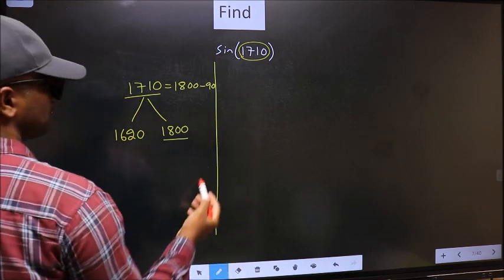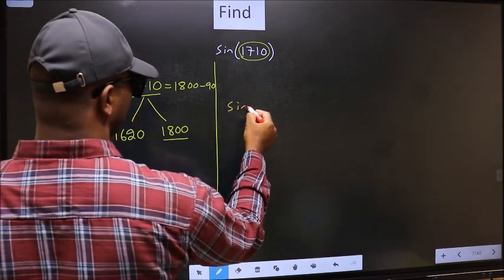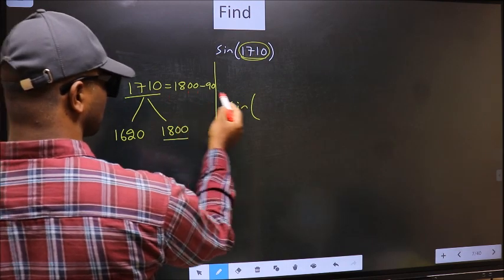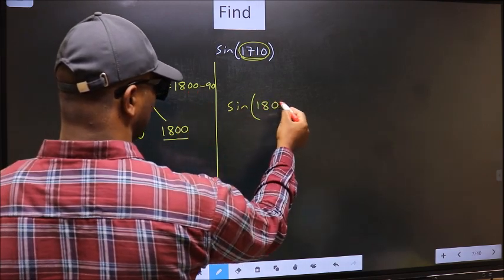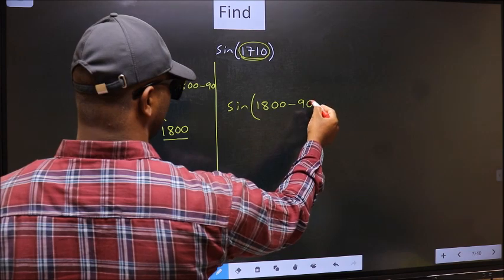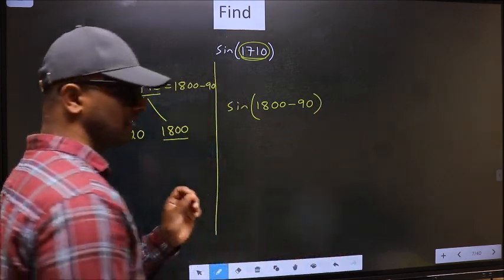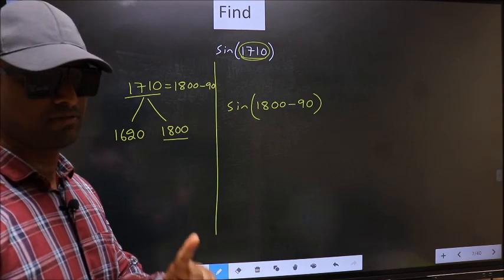So this will become sign. In place of this, we should write this: 1800 minus 90. This is your step 1.